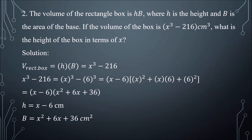Number 2: the volume of a rectangular box is h times b, where h is the height and b is the area of the base. If the volume of the box is x cubed minus 216 cm cubed, what is the height of the box in terms of x?